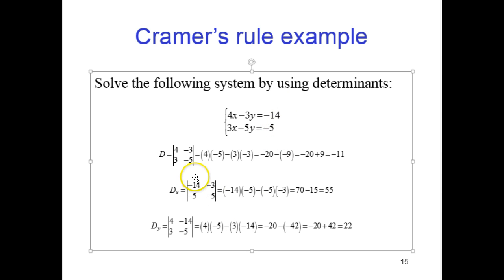And we stick those in the x column, right? In place of the 4 and the 3, we put our constants, and we do the same multiplication, cross multiplication deal.